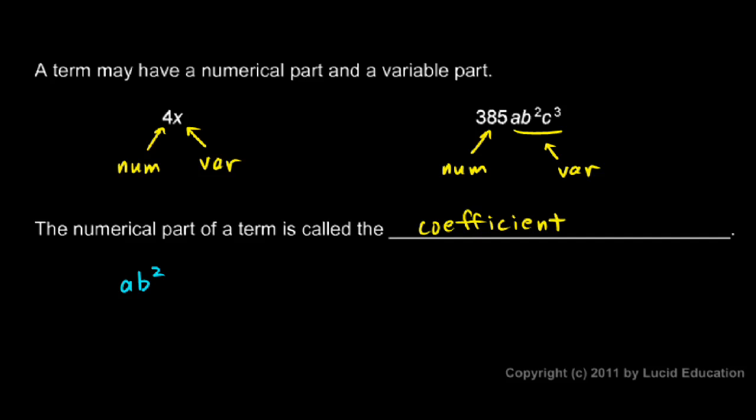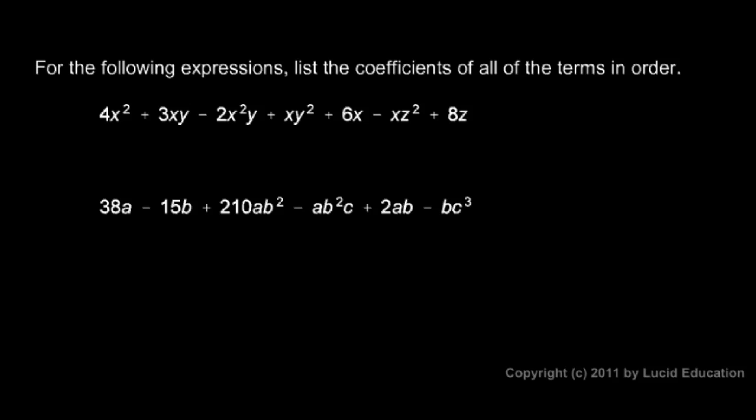It's not 2a·b² or 3a·b² — it's understood that the coefficient is 1. a·b² is the same thing as 1 times a·b², so even though it's not written, we understand the coefficient is 1. Now we're given some big expressions and we're told to list the coefficients of all the terms in order. Remember, the coefficient is just the numerical part.